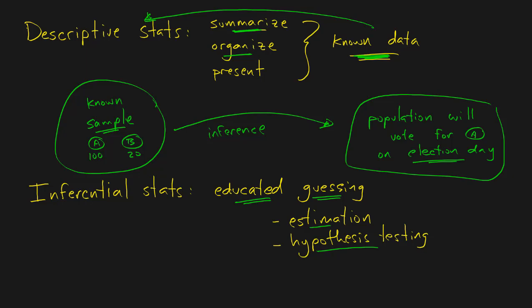So inferential statistics is when you start off with known data, just like descriptive statistics works with known data. But then you take a leap - you make a guess based on your known data about something you predict or estimate will happen.